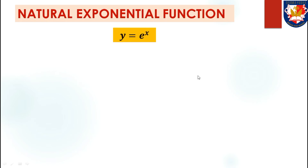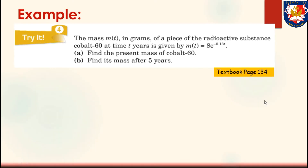The natural exponential function is an example of an exponential function itself. Its form is y equals e to the power of x, where e is Euler's number with value approximately 2.718. Example: the mass M(T) in grams of a piece of radioactive substance cobalt-60 at time T years is given by M(T) equals 8e to the power of negative 0.13T. Part A: find the present mass of cobalt-60. Part B: find its mass after 5 years.